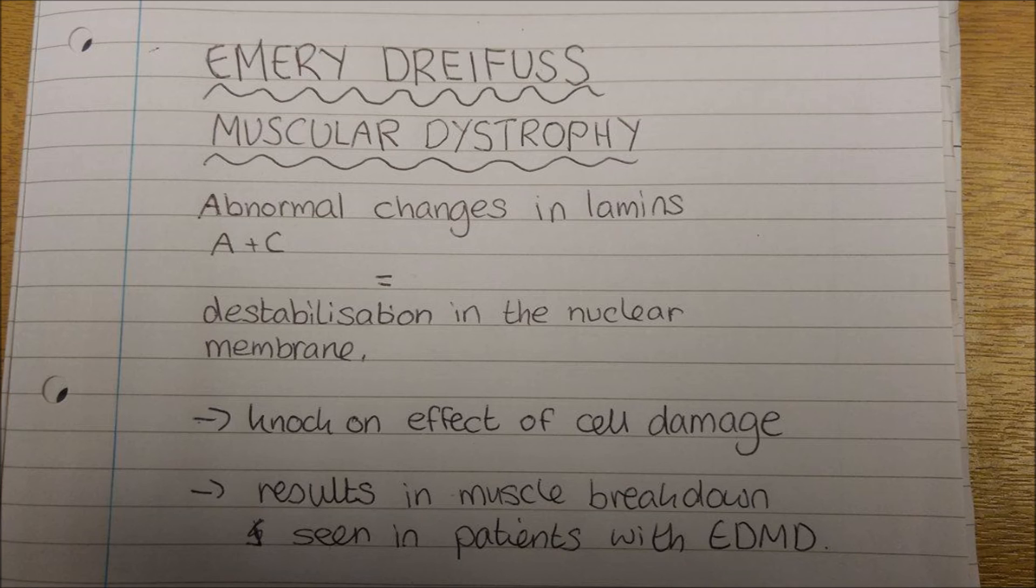As the nuclear lamina is made up of lamin proteins, a mutation in the lamins genes would cause the cell to have an incorrectly formed nuclear lamina. For the example of EDMD, research suggests that abnormal changes in lamins A and C cause a destabilisation in the nuclear membrane.